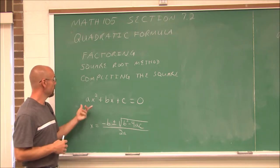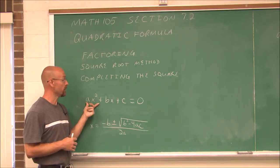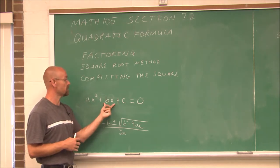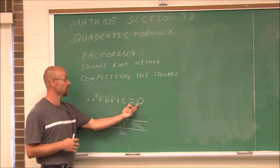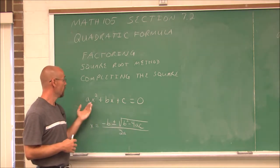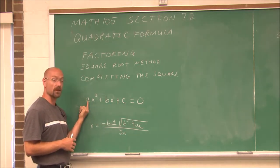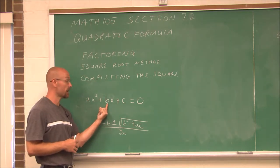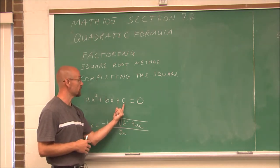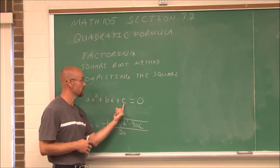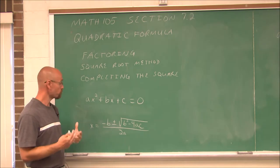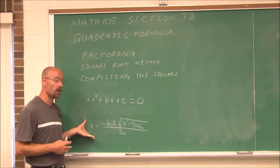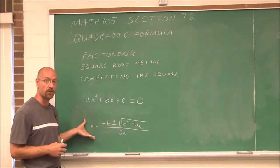If we have a quadratic equation in standard form — ax squared plus bx plus c equal to 0 — we can identify the coefficients of the x squared term, the x to the first power term, and the constant: a, b, and c. We can use a tool called the quadratic formula.